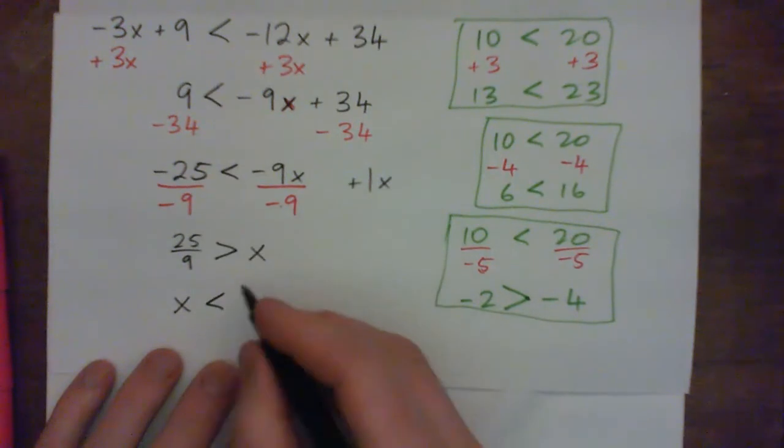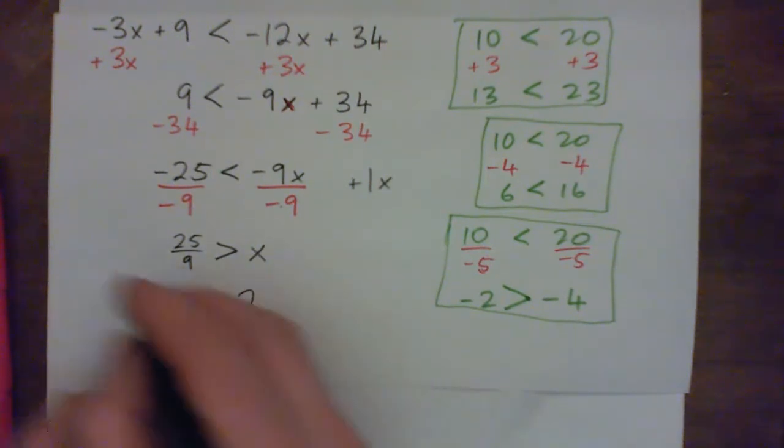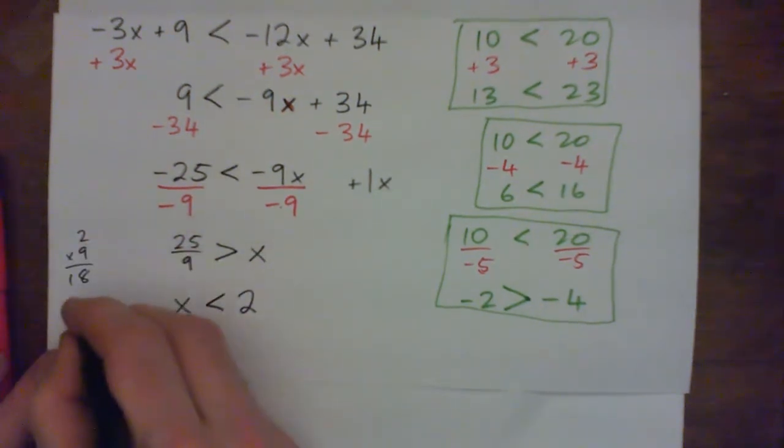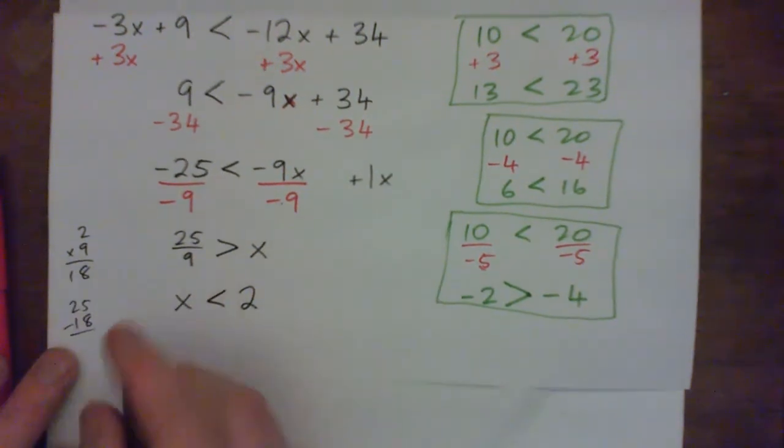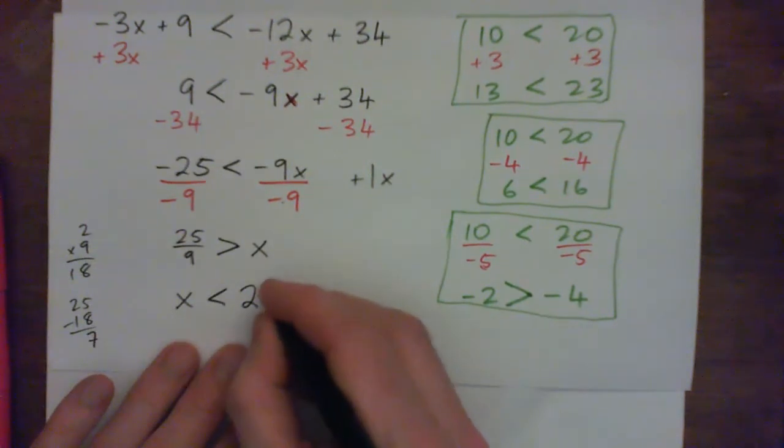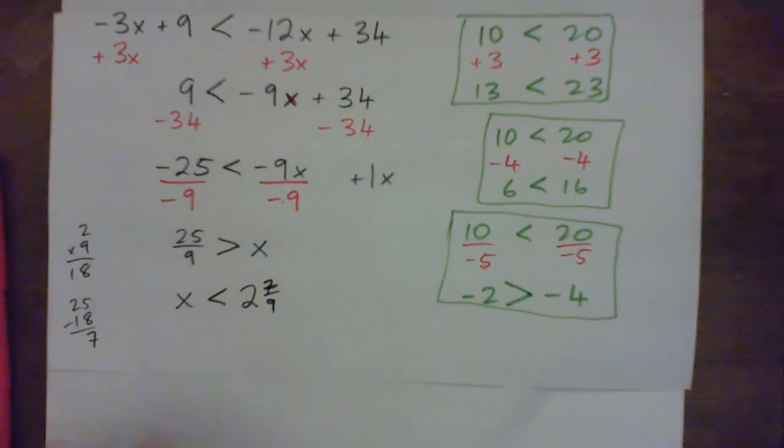9 into 25 goes 2 times. Remainder what? Because 2 ninths is 18. 2 times 9 is 18. And 25 minus 18 is 7. So we have 2 and 7 ninths. So it's x is less than 2 and 7 ninths.